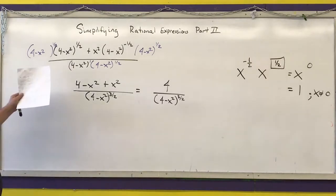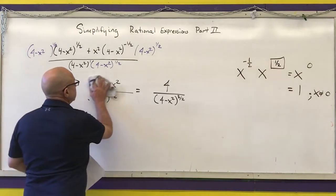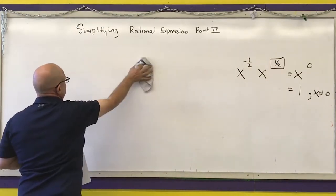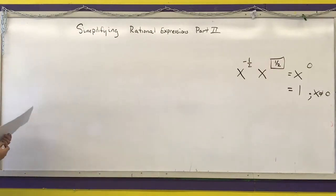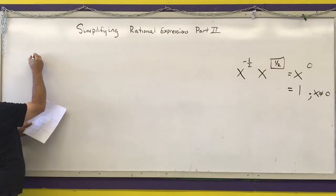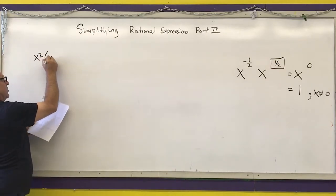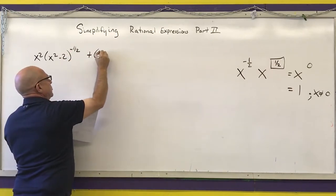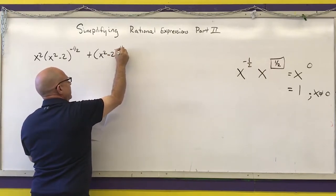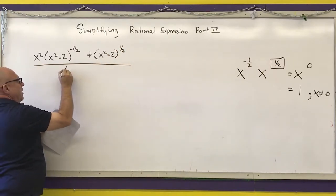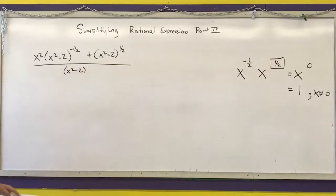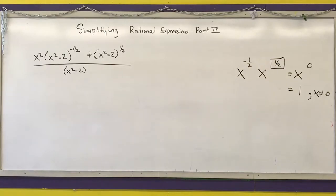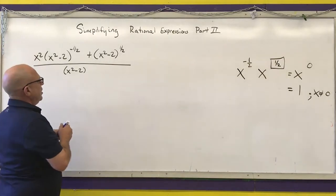Let's do another one that's very similar — a fraction with things raised to rational powers. The expression is: x squared times (x squared minus 2) to the negative one-half, plus (x squared minus 2) to the positive one-half, all over (x squared minus 2). The lowest power of (x squared minus 2) is to the negative one-half power, so I am going to eliminate that by multiplying every term by (x squared minus 2) to the one-half power.